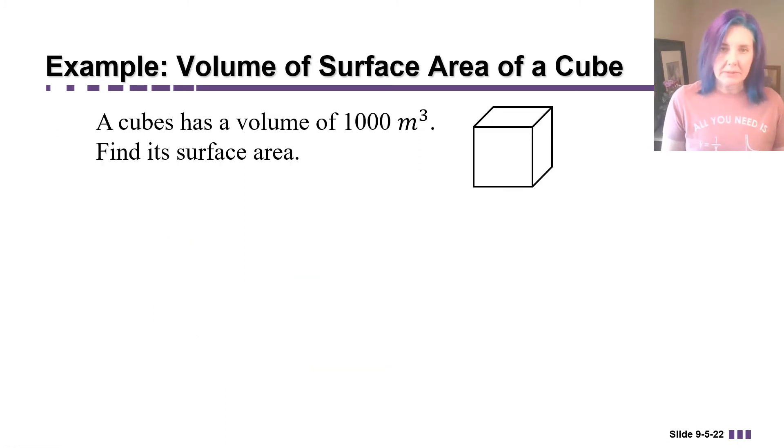Let's work backwards a little bit. What if I told you that a cube has a volume of 1000 cubic meters, and I asked you to find its surface area. So we're still going to need the volume and surface area formulas, but we're going to use them a little bit differently.